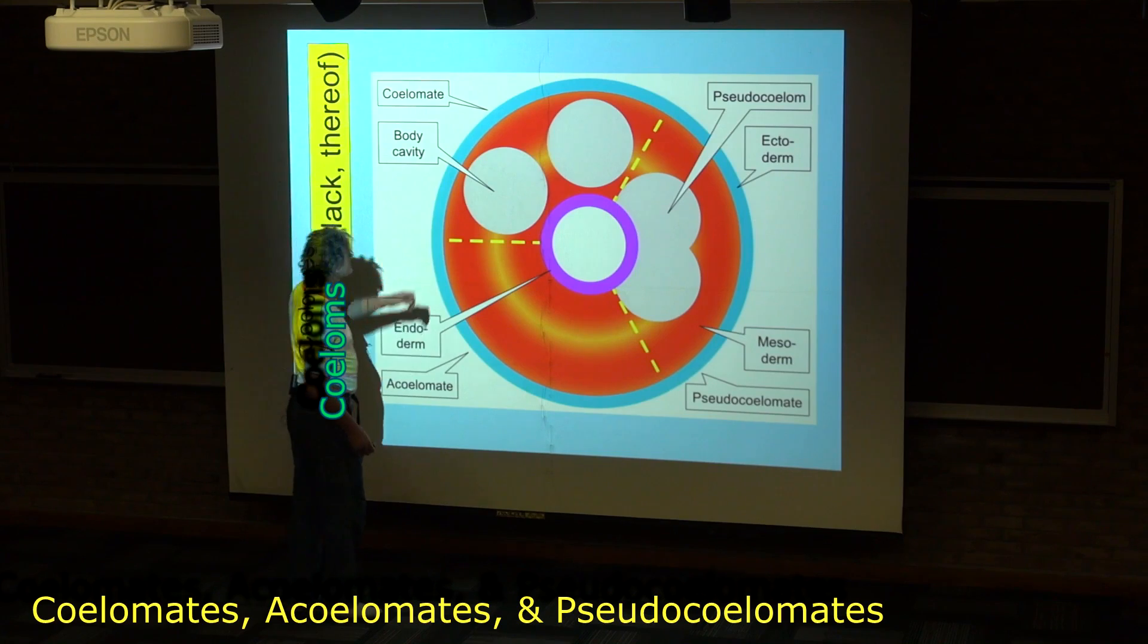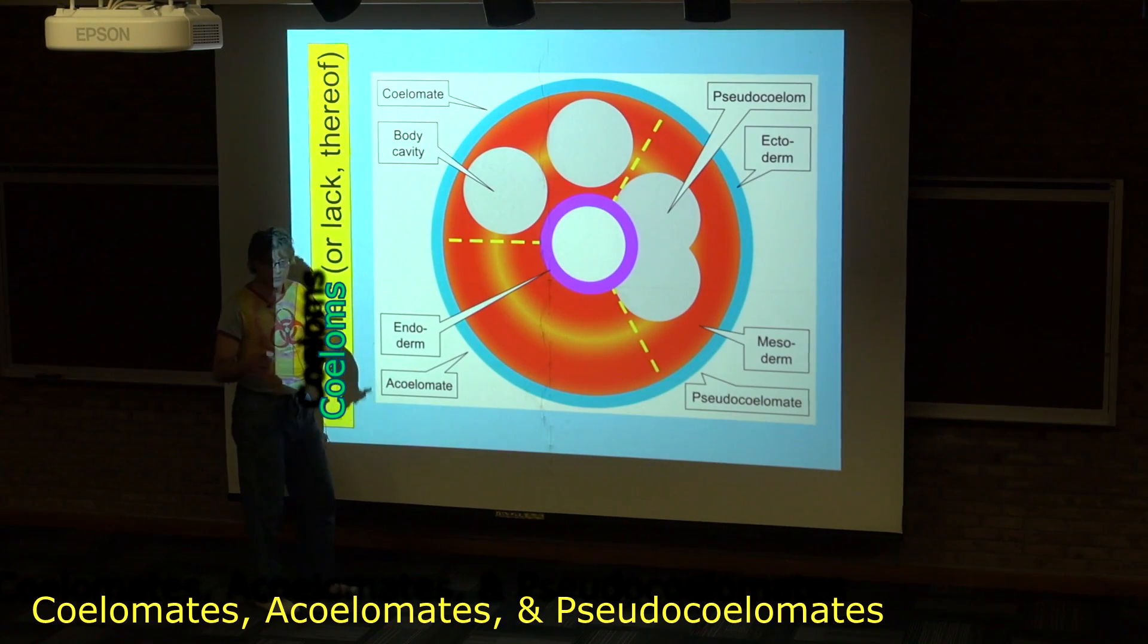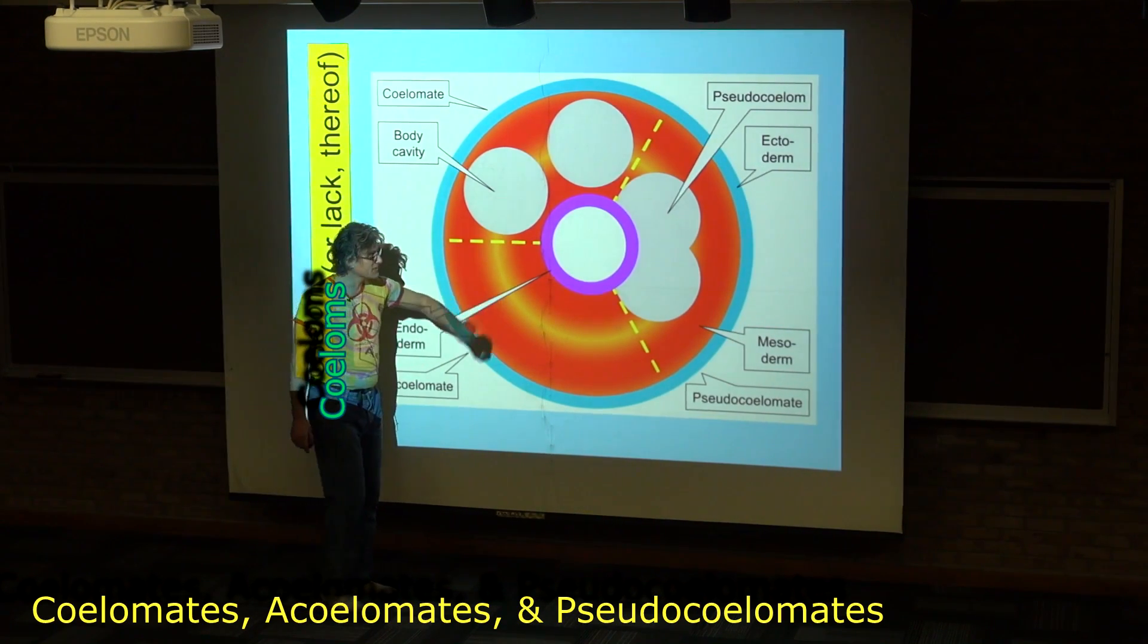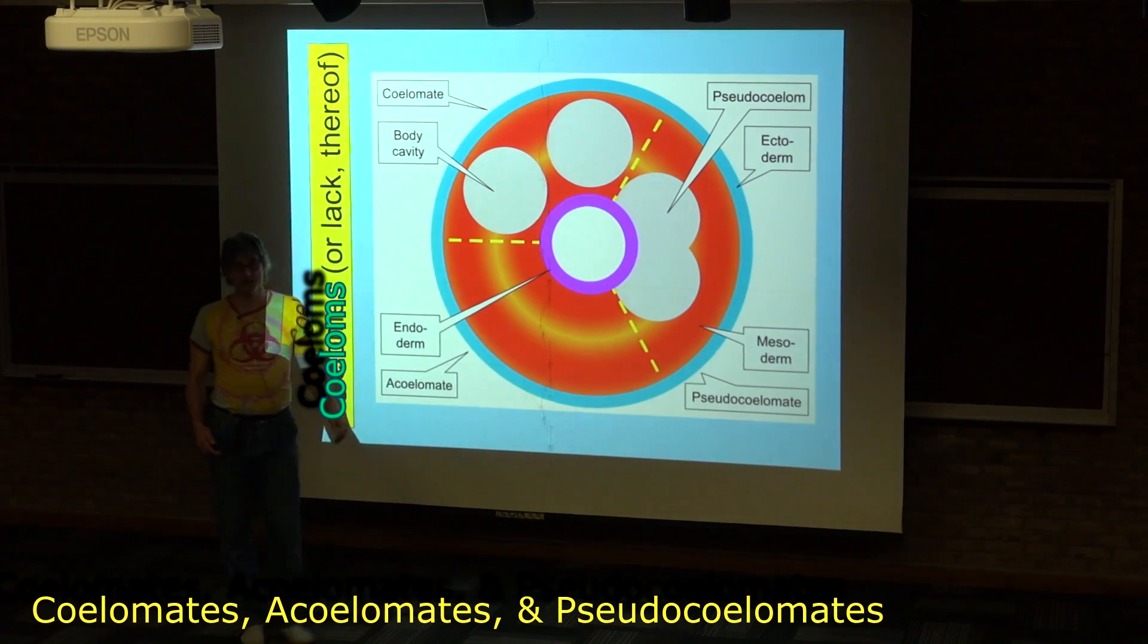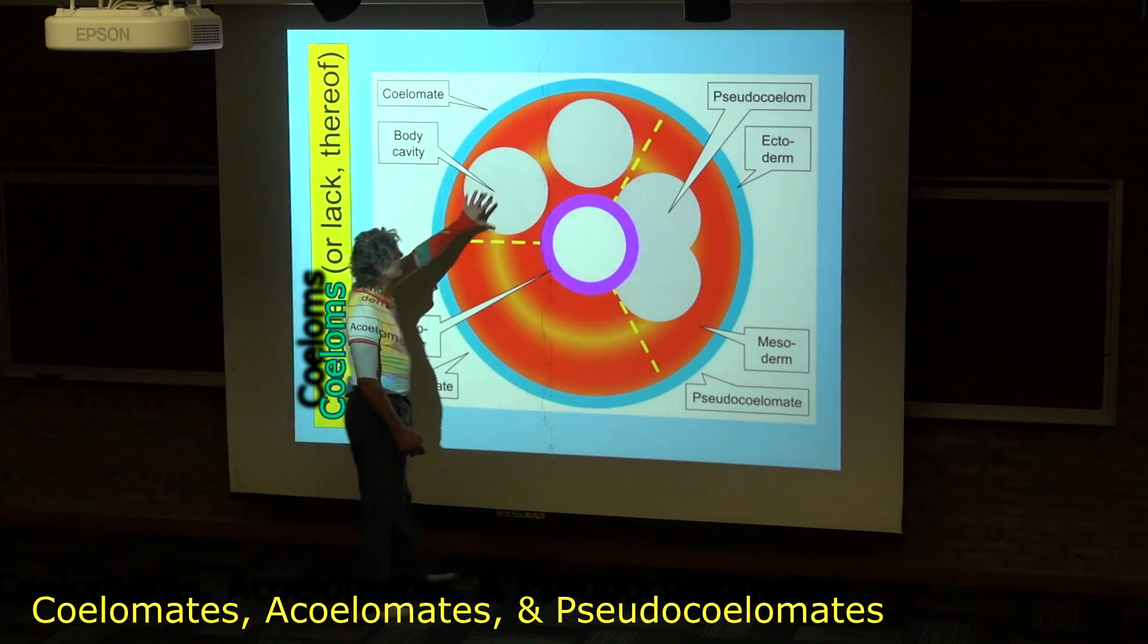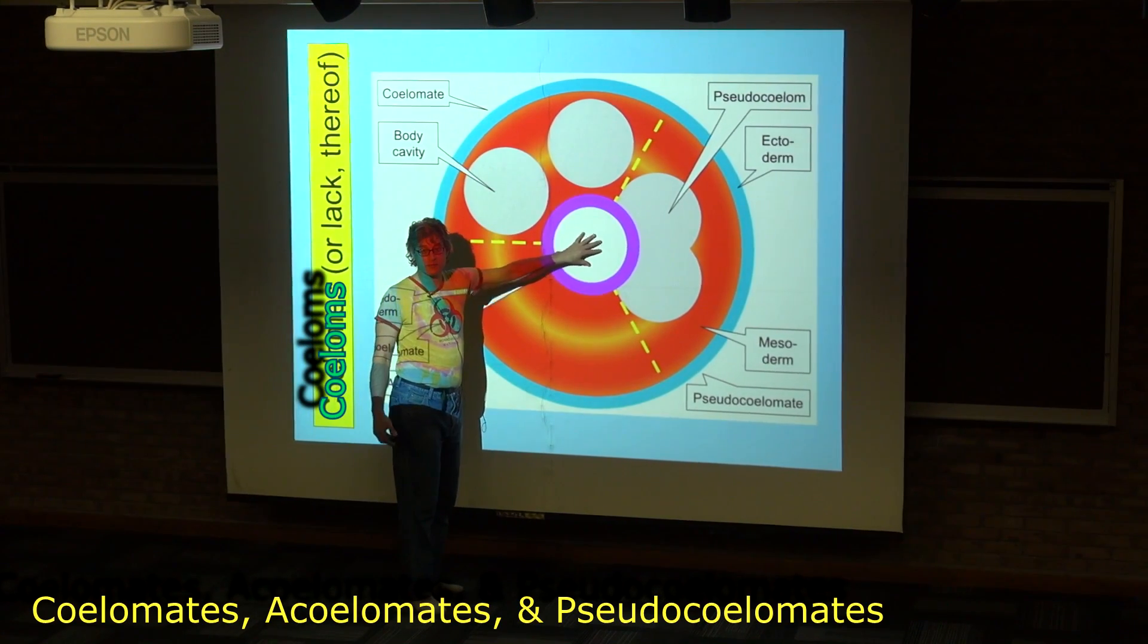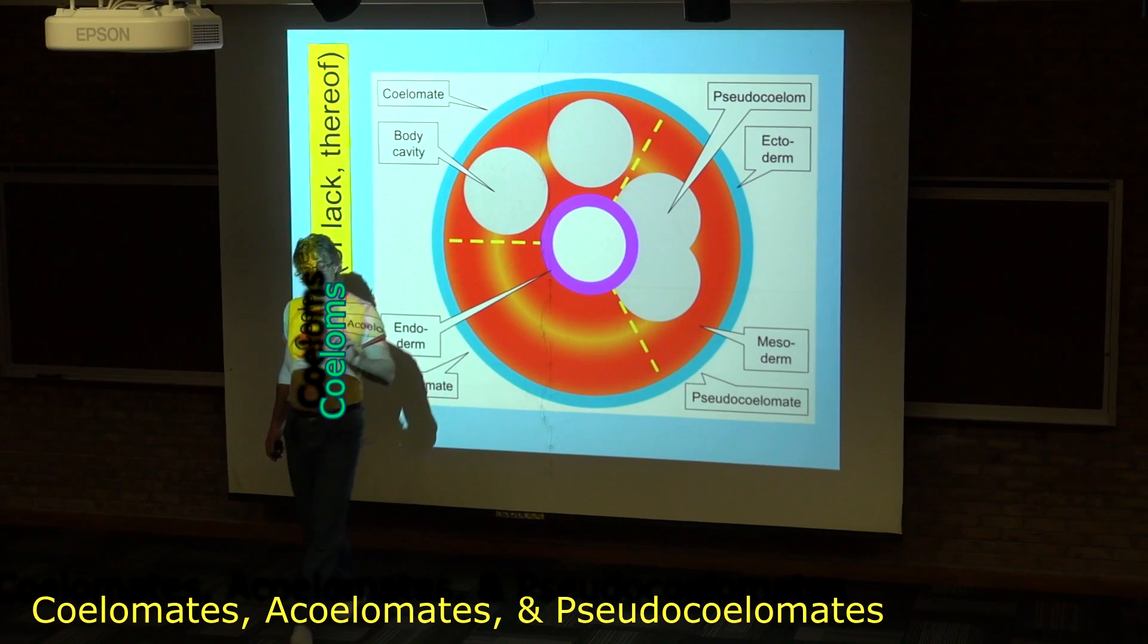These are the basic types of animals that are triploblastic. They're either acoelomates, pseudocoelomates, or they're what is known as coelomates. The body cavity is this volume that's different from the gastro cavity.